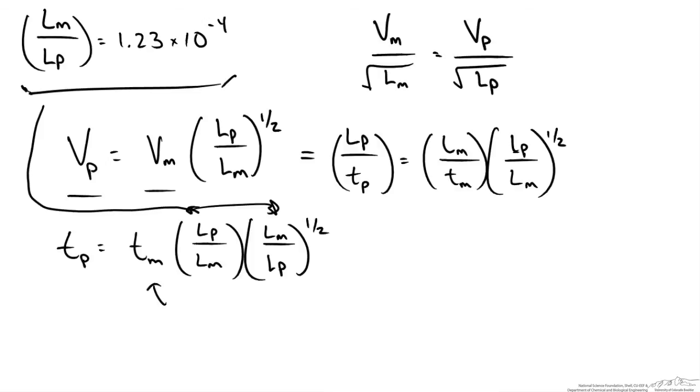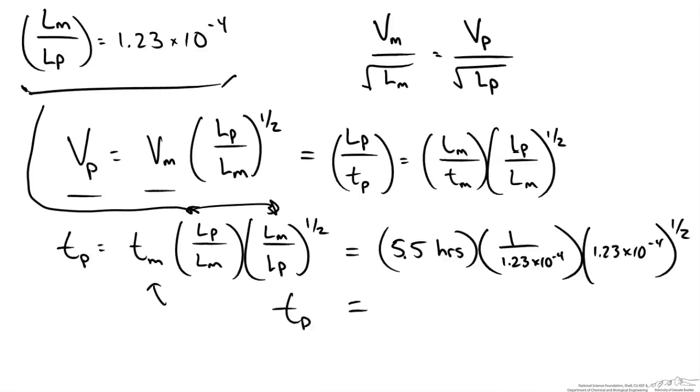So now using this ratio we scaled before we could plug that in here as well as here and we are given a time. So I get a time of our glacier of 495 hours which is approximately 21 days. So I hope this screencast gives you an idea on how to use similitude and create dimensionless pi groups to scale between a model and an actual prototype.